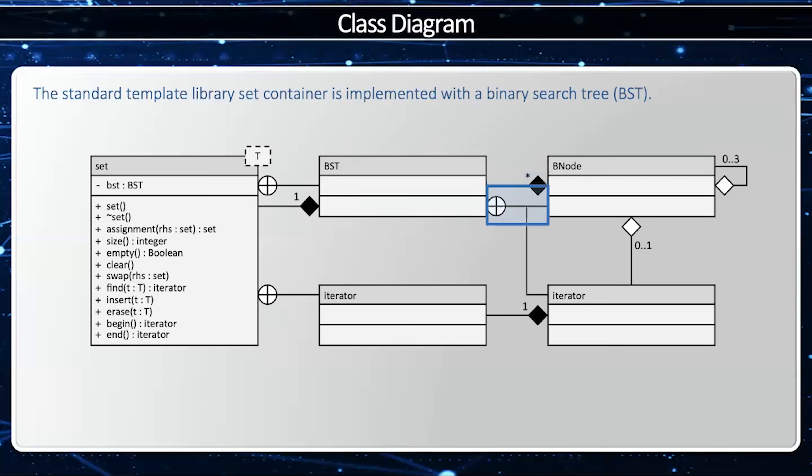Now, notice we have this funny pinwheel end cap. This means that B node is a nested class within BST. Since the B node only makes sense within the context of the BST, it makes sense to define it within the BST. This is a subclass.